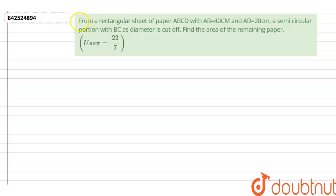Hello everyone, let's start this question. This question says that from a rectangular sheet of paper ABCD, AB is 40 centimeters and AD is 28 centimeters. A semicircular portion with BC as diameter is cut off. We need to find the area of the remaining paper. Here it is also given that pi is 22 by 7. We need to use pi as 22 by 7 in our calculations.